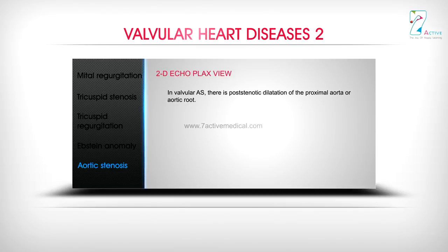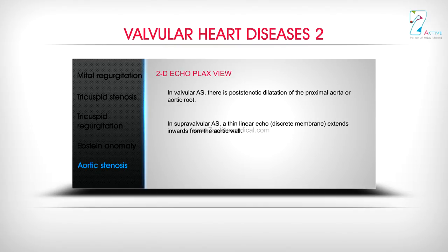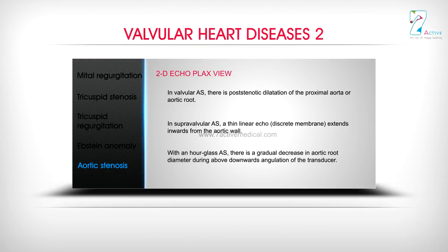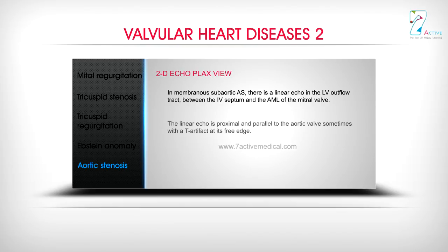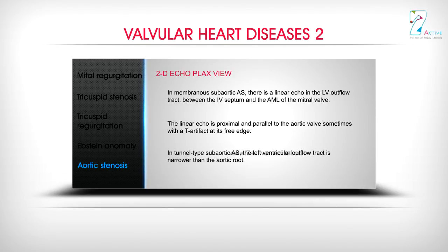In valvular AS, there is post-stenotic dilatation of the proximal aorta or aortic root. In supravalvular AS, a thin linear echo — discrete membrane — extends inwards from the aortic wall. With an hourglass AS, there is a gradual decrease in aortic root diameter during above-downwards angulation of the transducer. In membranous sub-aortic AS, there is a linear echo in the LV outflow tract between the IV septum and the AML of the mitral valve, proximal and parallel to the aortic valve, sometimes with a T artifact at its free edge. In tunnel-type sub-aortic AS, the left ventricular outflow tract is narrower than the aortic root.